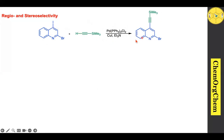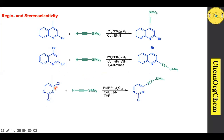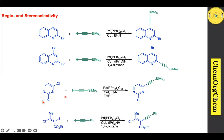When both substituents are bromide, we look at which position is more electrophilic — that position undergoes the Sonogashira cross-coupling reaction preferentially, producing the corresponding product. The same principle applies across similar examples.